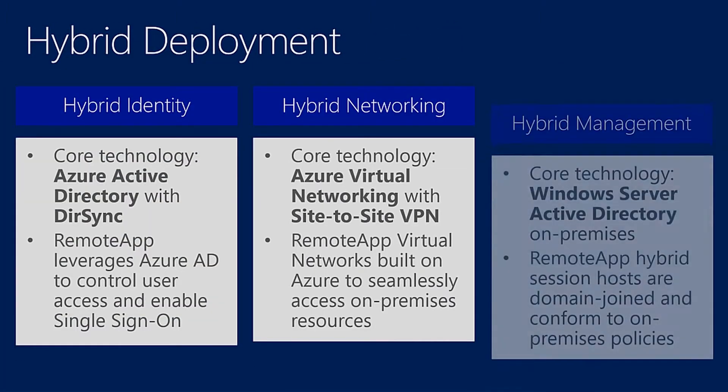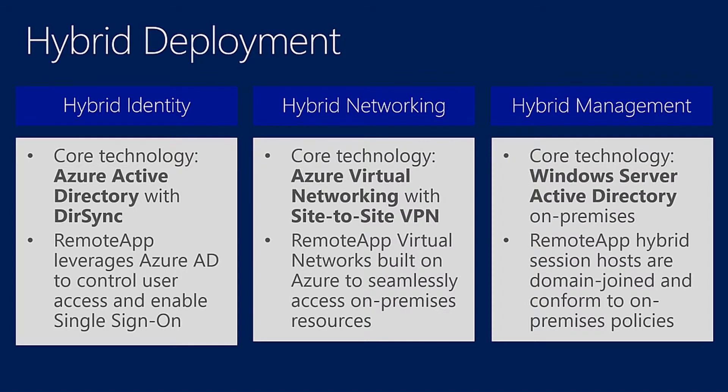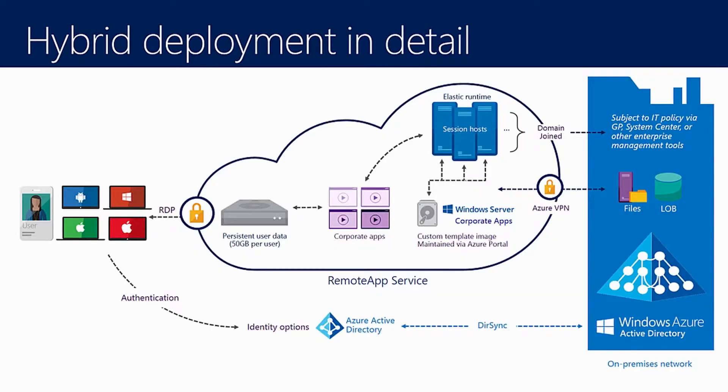For a hybrid deployment, it's a little different — we can connect our on-premises infrastructure to these services to support front-ending those applications, whether in a production scenario or as a disaster recovery scenario. We can leverage the hybrid networking functionality of Microsoft's Azure platform by using a site-to-site VPN tunnel to connect those resources. You can see the hybrid deployment in detail, with the Azure site-to-site tunnel connecting Azure infrastructure to on-premises infrastructure.